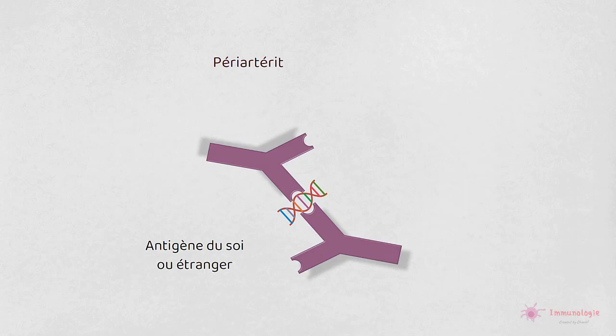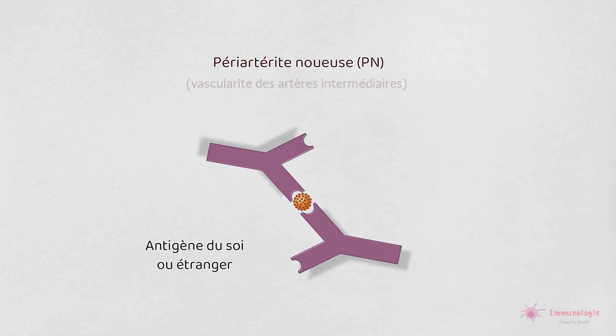Dans certains cas de périartérite noueuse, qui est un type de vascularite impliquant les artères de taille moyenne, les complexes immuns sont constitués d'antigènes viraux et d'anticorps. La maladie est une complication tardive d'une infection virale, le plus souvent par le virus de l'hépatite B.